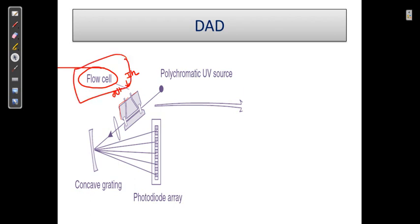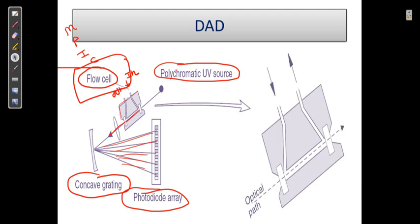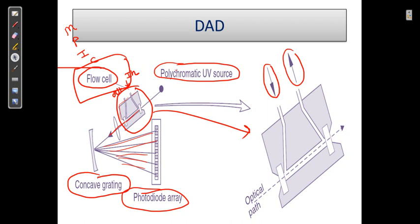Here is the HPLC system diagram: pump, injector, column, and detector gate. There is a polychromatic UV light source, and a concave grating that disperses the light to produce a photodiode array. The flow cell shows mobile phase in and mobile phase out, with the UV light source on one side and detection on the other.